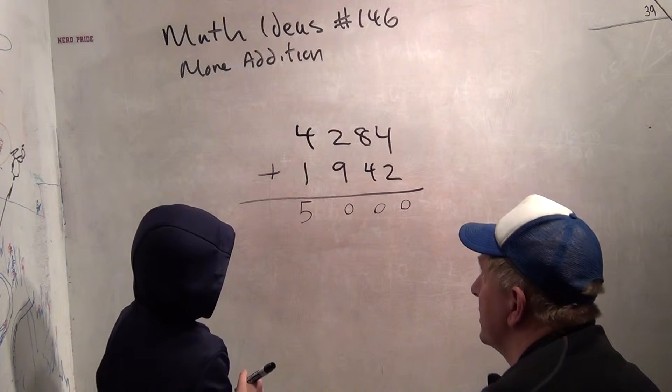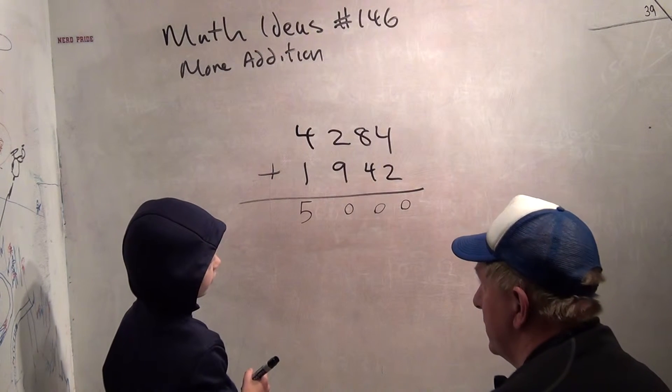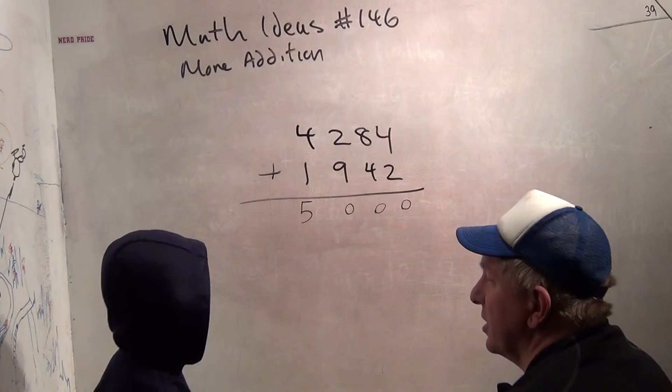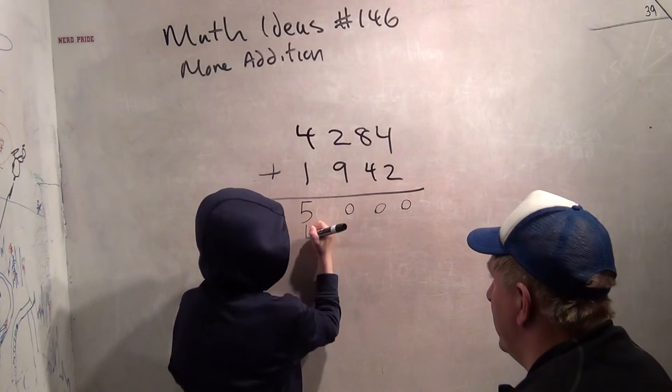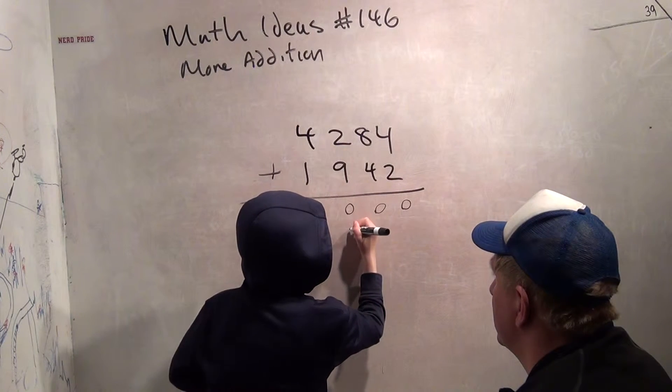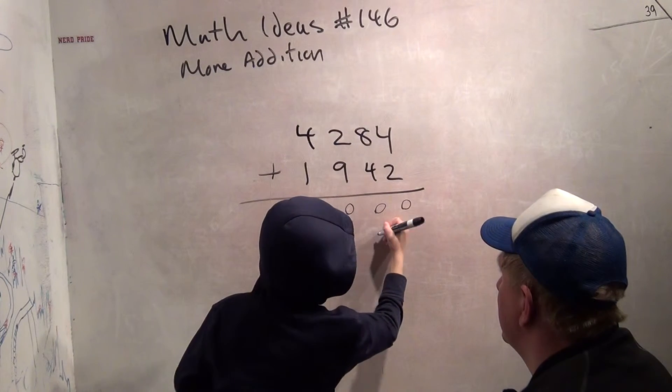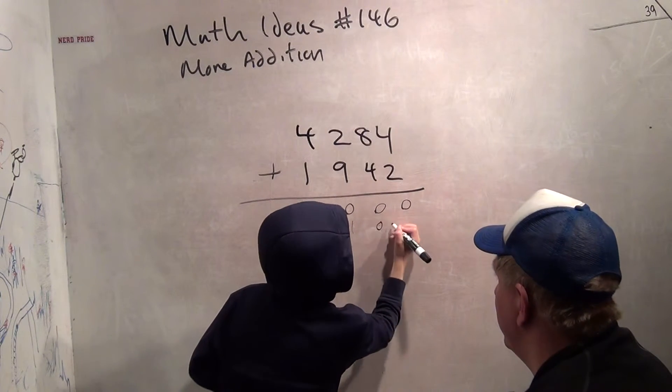200 plus 900 is 1,100. How do you write that the way we've been writing this? Where does your 1,000 digit go? Where's your 100th digit? 100 here. 1,000? Yep, 1,100. Very good.